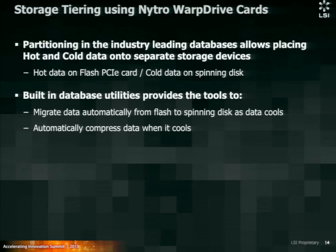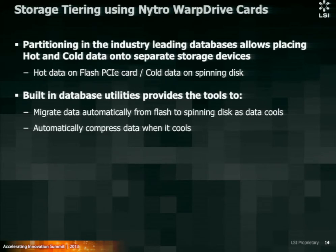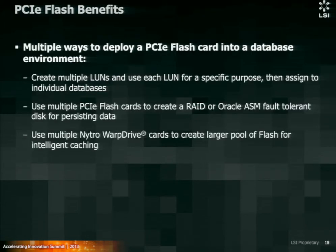Another way to implement Nitro Warp Drive in an Oracle database environment is partitioning, which allows placing hot and cold data onto separate storage devices. You place all the hot data on a PCIe card and all the cold data on spinning disks. In some of the later releases of Oracle, Oracle is providing tools to automate this migration from Flash to spinning disk as the data cools. You can also create multiple LUNs for specific purposes and assign those LUNs to individual databases, or use multiple PCIe flash cards to create a RAID or Oracle ASM fault-tolerant disk for persisting data.